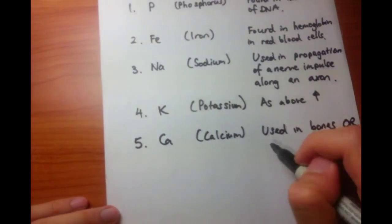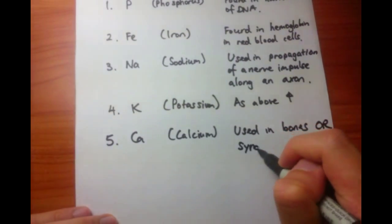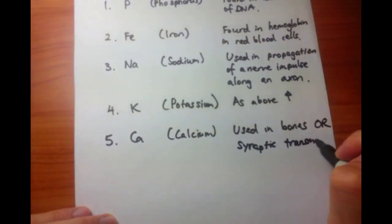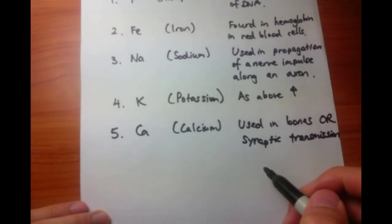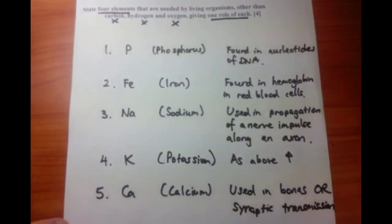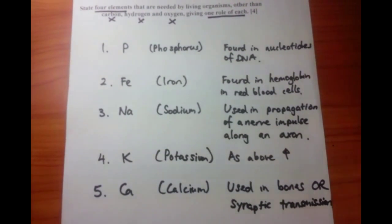The final thing we're going to talk about is calcium, and all of you should know that calcium is found in bones, and a function that you may not know that calcium is involved in is with synaptic transmission, and this is to do with transmitting a message across between two axons.